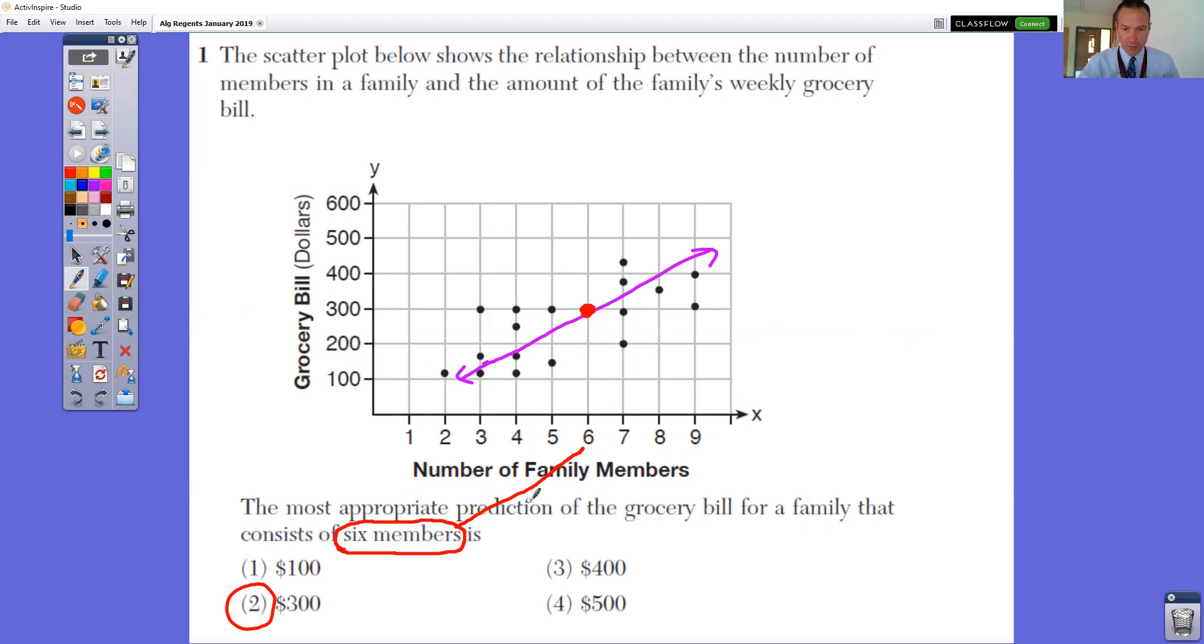So the most appropriate prediction of the grocery bill for a family that consists of six members. You want to go up to six and go straight up. You want to draw your trend line. When you draw your trend line, you want about half the dots above and about half the dots below of your trend line or line of best fit. So it would be this purple line approximately.